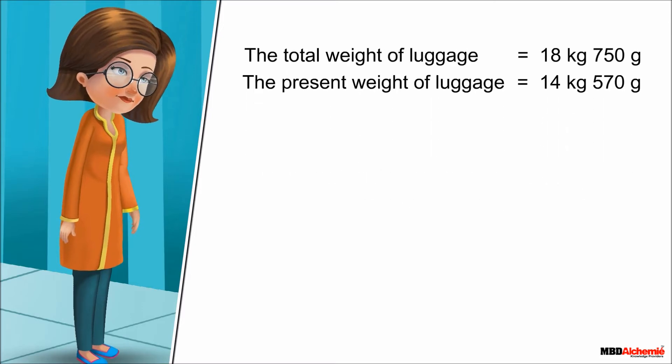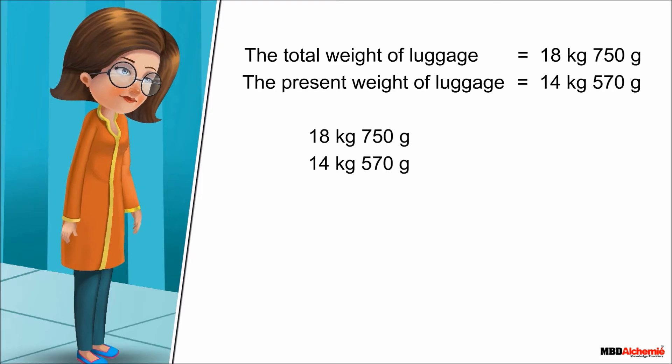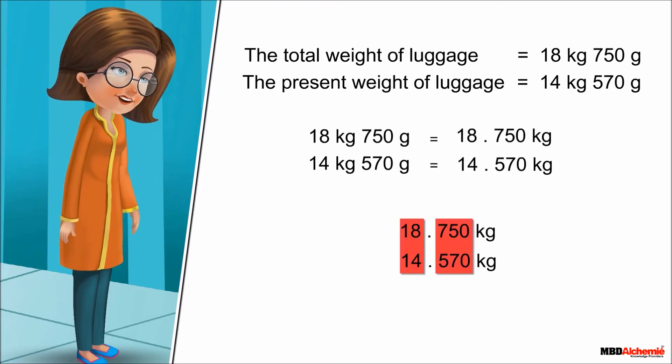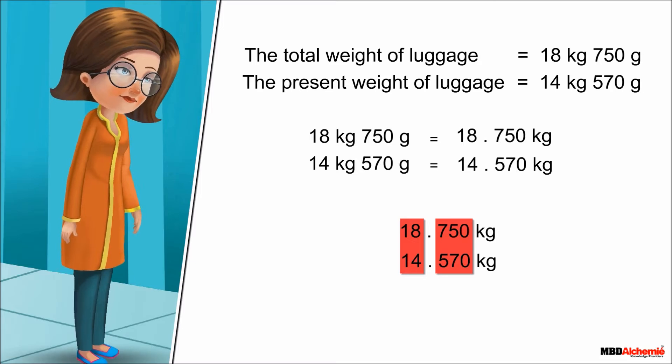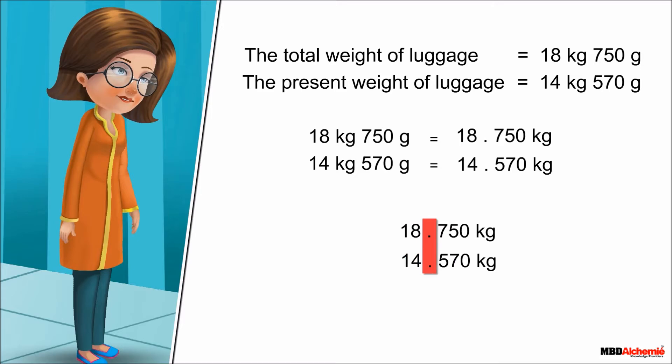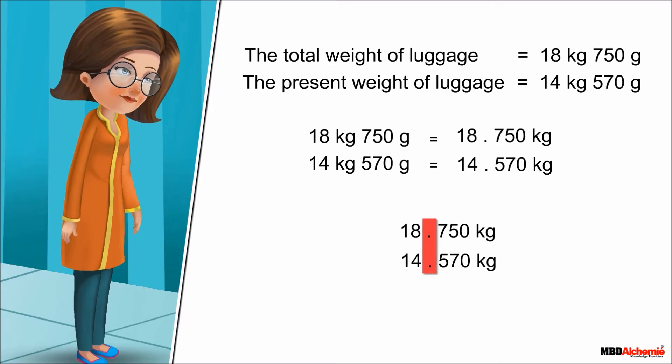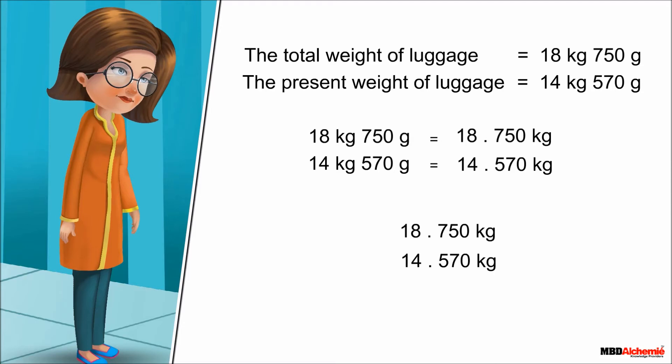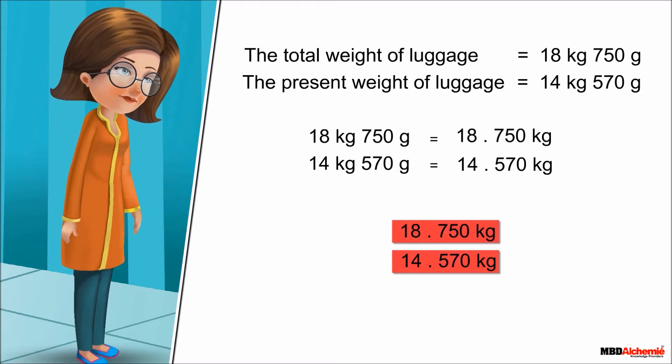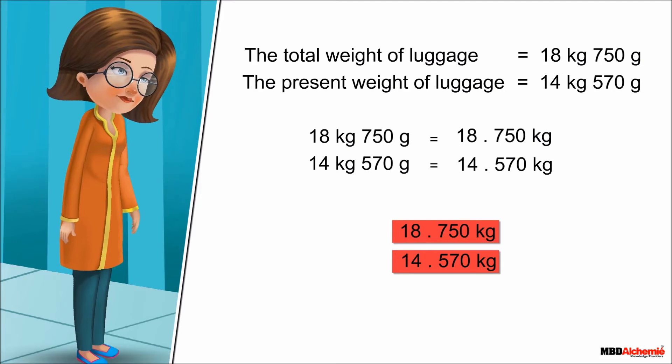She subtracts as: First, she converts the weights in terms of kilograms. Then write the two numbers in column and puts the decimal point one below the other, so that the digits are in the same place. Now she can change the decimals to like decimals if required. But here, they are already given in the form of like decimals.